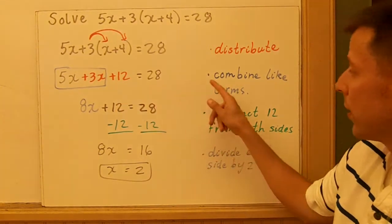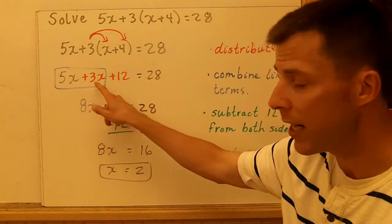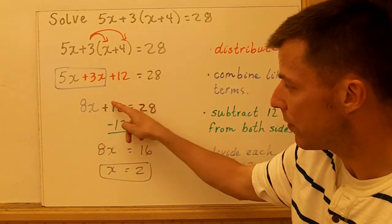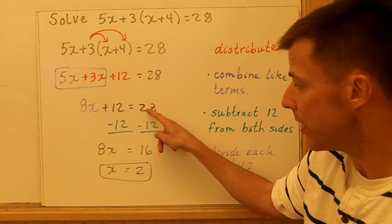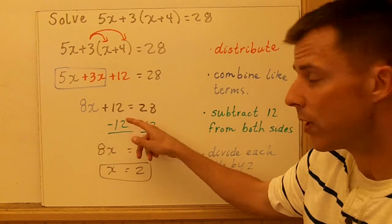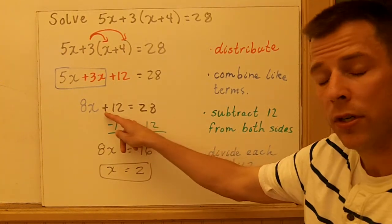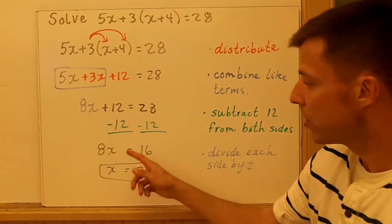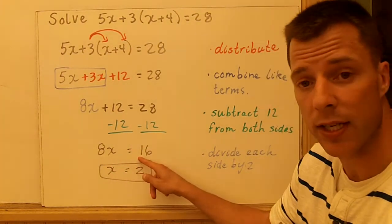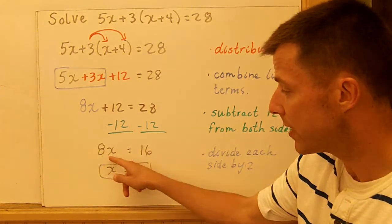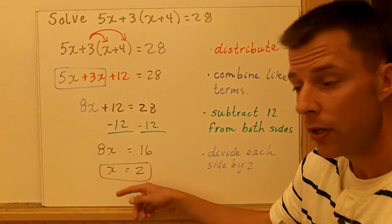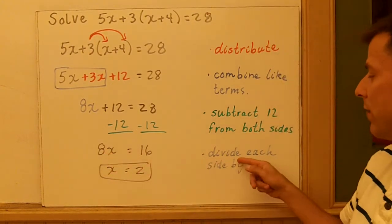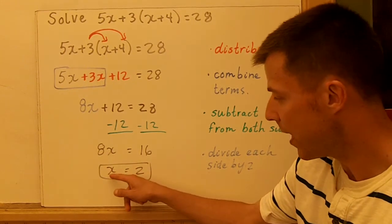Like in the last example, we're going to combine like terms. I have 5x's and 3 more x's, that gives me 8x's. So I combine like terms, the 12 comes down, the 28 comes down. Now I have a two-step equation where I'm going to undo the addition of 12 by subtracting 12 from both sides. I have 8x equals 16. Mental math tells you 8 times 2 is 16, so your answer is 2. If you wanted to do it algebraically, you divide each side by 8 and get x equals 2.